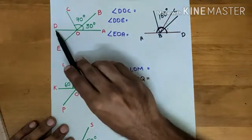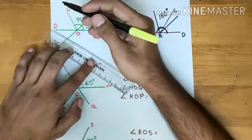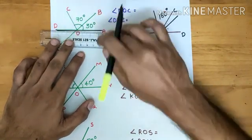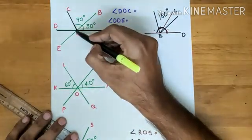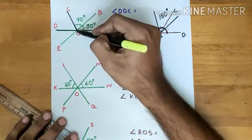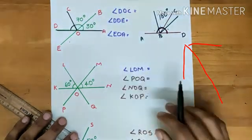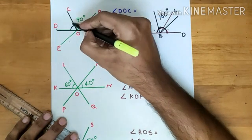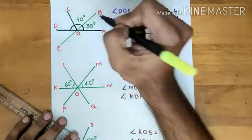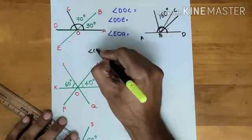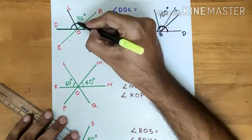We can use the concept of linear pair. Consider this line and this line meeting another line — that is a linear pair. So what is the sum of these angles? The sum of these angles must be 180 degrees. It is also given 70 and 30, so this angle — angle COA — will be 70 plus 30, equal to 100 degrees.